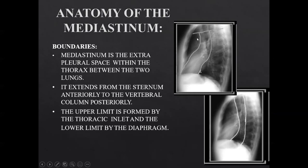The inferior mediastinum is further divided into anterior, middle, and posterior mediastinum with respect to the pericardium. The anterior mediastinum lies anterior to the pericardium. The middle mediastinum consists of the pericardium, and the posterior mediastinum is posterior to the pericardium. Felsen divided the mediastinum into anterior, middle, and posterior with respect to two lines — one drawn along the anterior aspect of the trachea and posterior margins of the artery, and another vertical line drawn along the thoracic vertebra 1 cm behind the anterior margins.